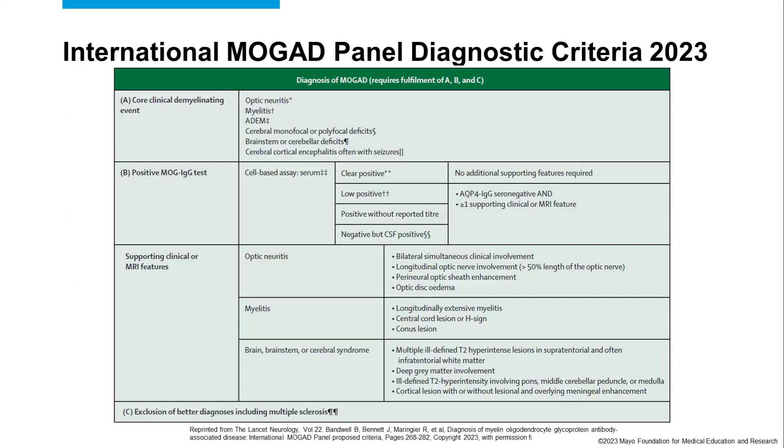These are the diagnostic criteria found in the manuscript, and there are three major parts. First, you have to have a core clinical demyelinating event. Second, you have to have a positive MOG antibody test, and depending on how positive it is — whether it's a clear positive or low positive — you may need some additional supporting features. Third, you have to exclude alternative diagnoses or a better diagnosis such as multiple sclerosis.